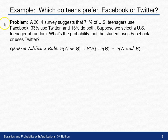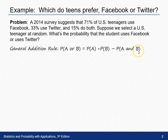To use this rule, you need to have two events, A and B. To figure out the probability of A or B, we find the probability of A, add that to the probability of B, and then subtract off the probability of A and B — that is, both of them occurring at the same time.